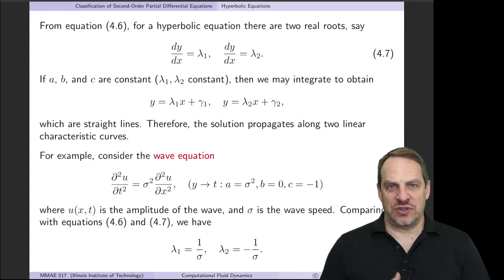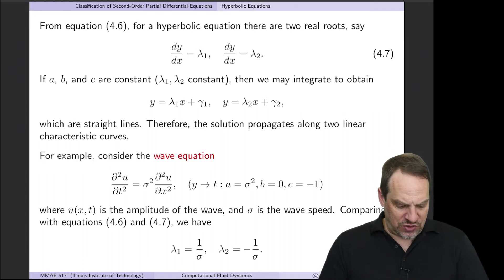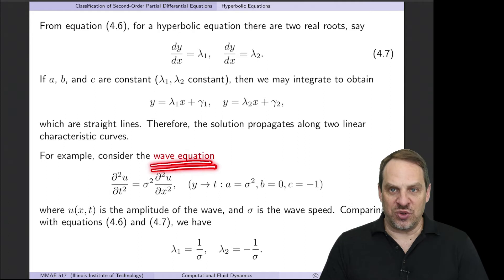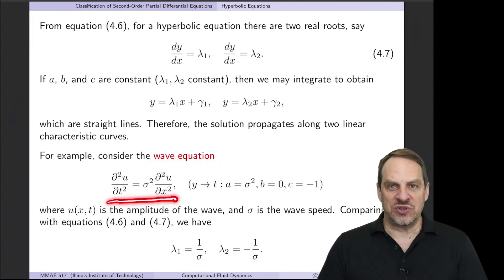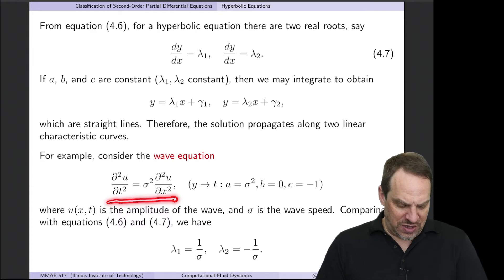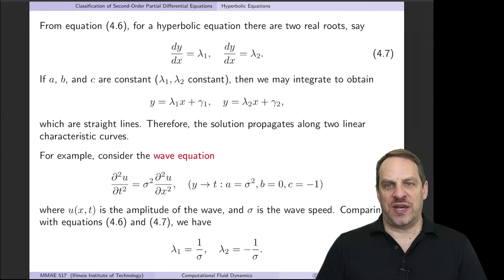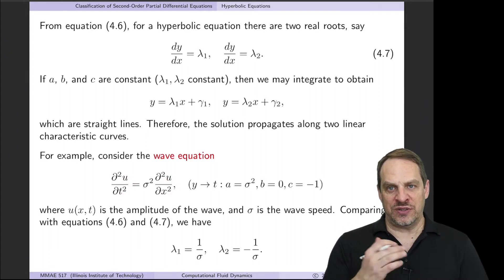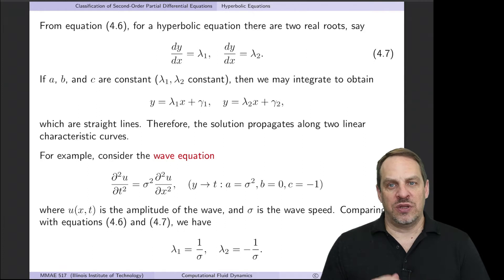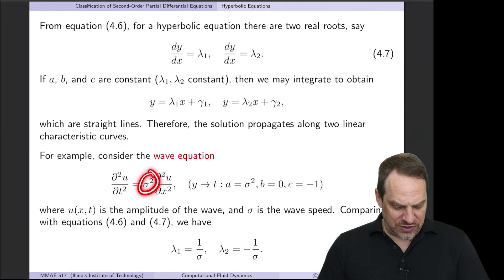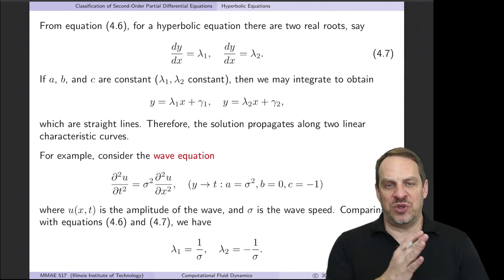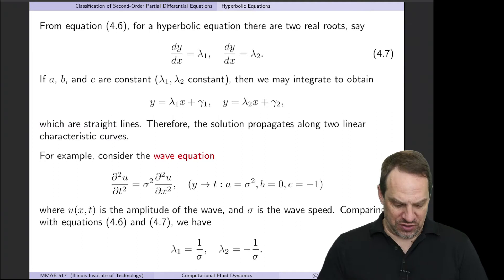The canonical example of a hyperbolic equation is the wave equation: ∂²u/∂t² = σ² ∂²u/∂x². Here u is a function of the two independent variables x and t—we have t instead of y, but the mathematics is no different. The σ² is the wave speed, the speed at which a wave travels through this particular medium.